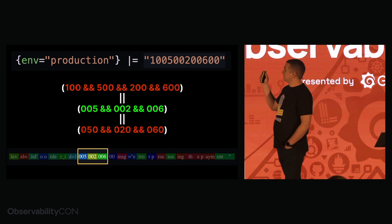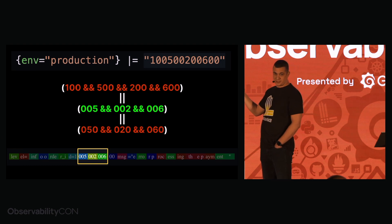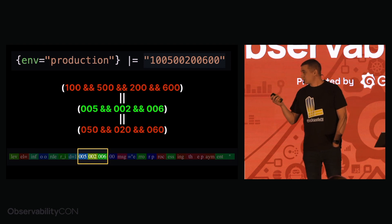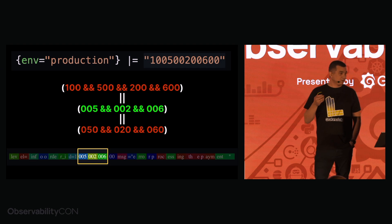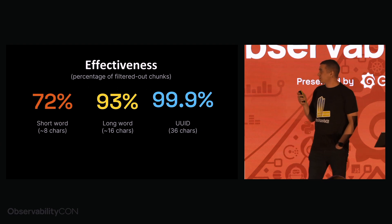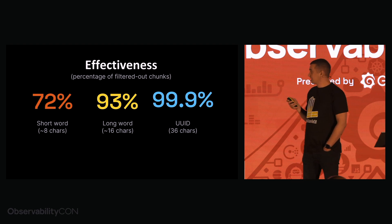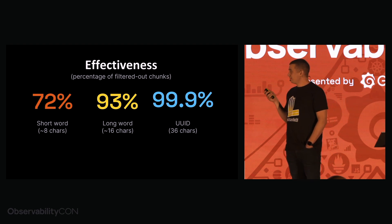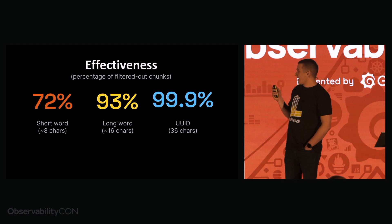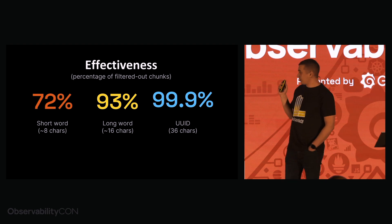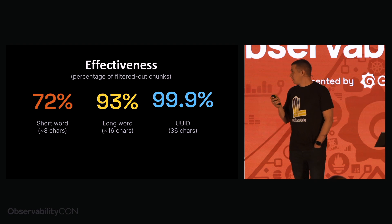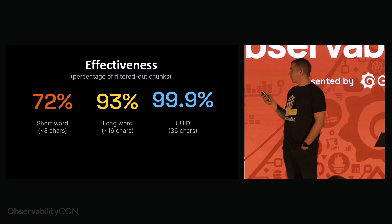Here you can see that Loki splits the ID from the line filter into all possible combinations of ngrams, and they are tested against the Bloom filter to check if the chunk might contain the data even before downloading it. For a query with a short line filter, this solution reduces the chunk count to check by 72%; for a long line filter, by 93%; and for a line filter with a length like a UUID, it reduces the chunk count by almost 100%.